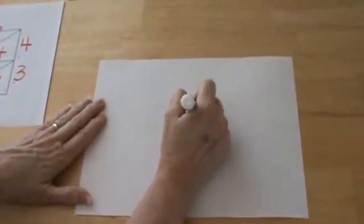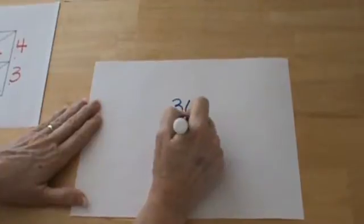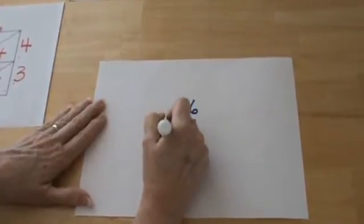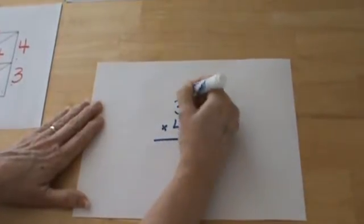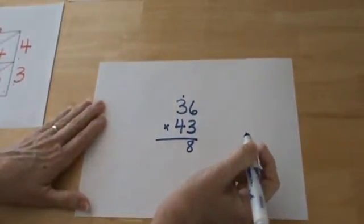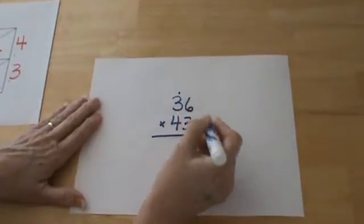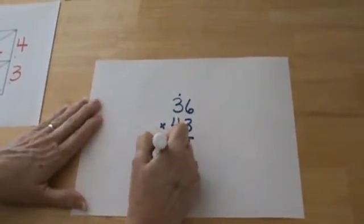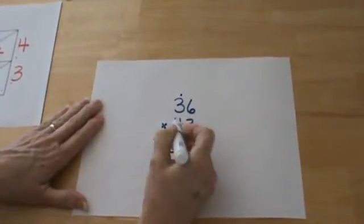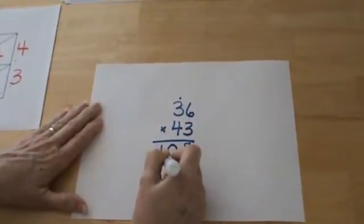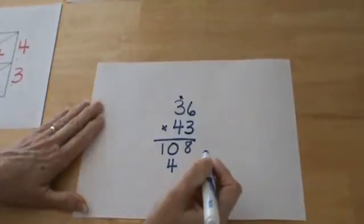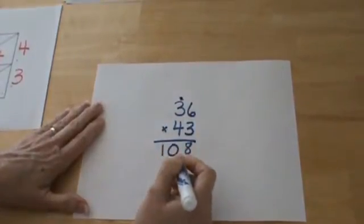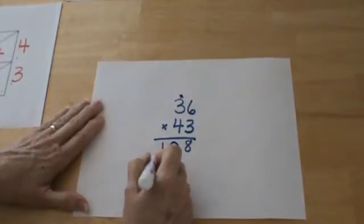And we would record 36 times 43. And 6 times 3 is 18. We have to carry that extra unit. And then we have 3 times 3 is 9. Plus that one more would be 10. 4 times 6 is 24. Again, carry that extra unit of 2. And 4 times 3 is 12. And 2 more is 14.